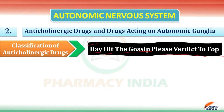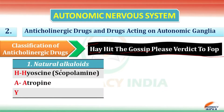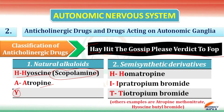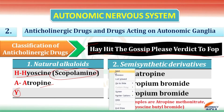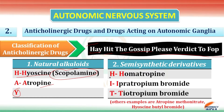The first class is natural alkaloids. H stands for hyosamine, also known as scopolamine; A stands for atropine; and Y is just to complete the mnemonic.